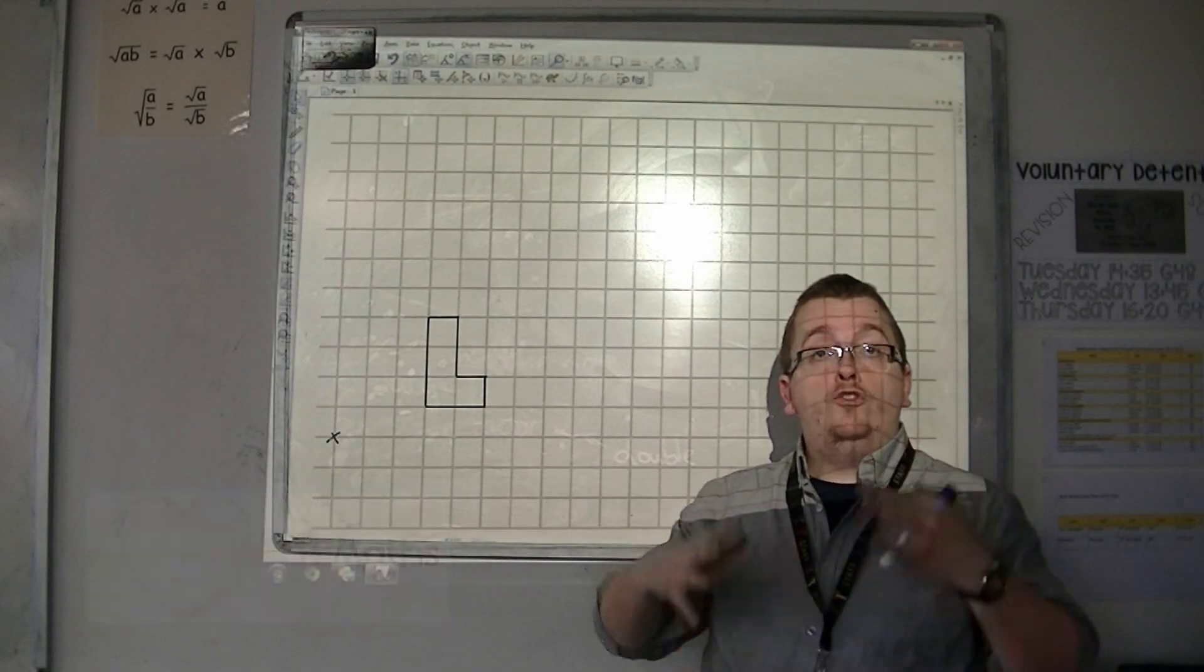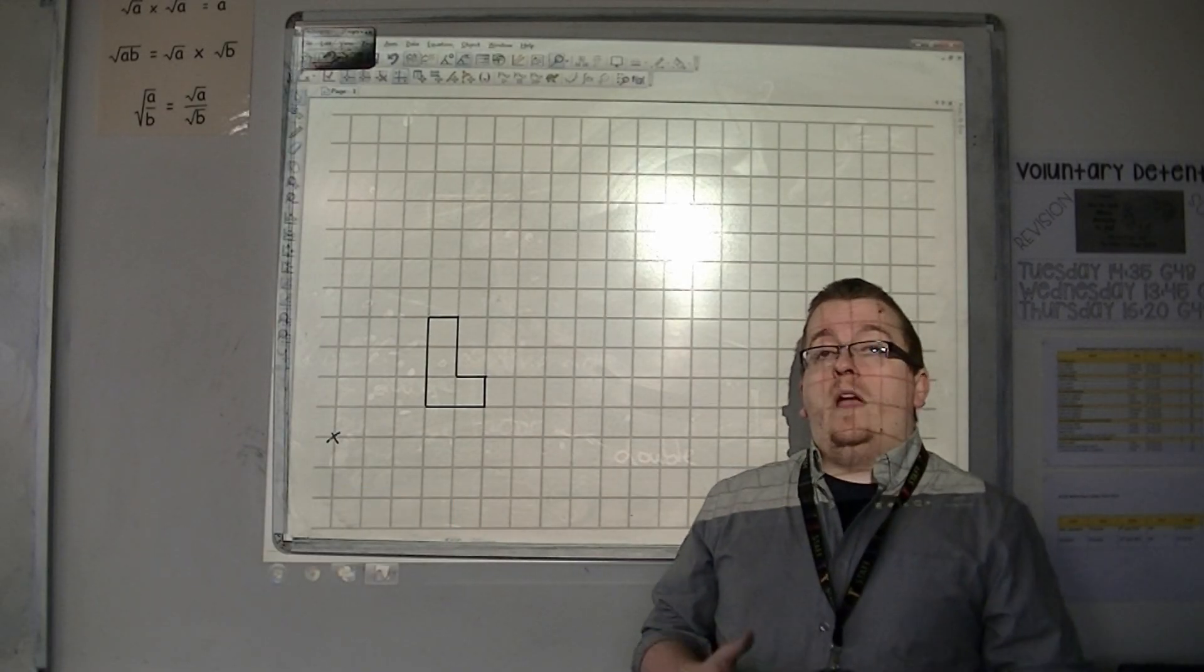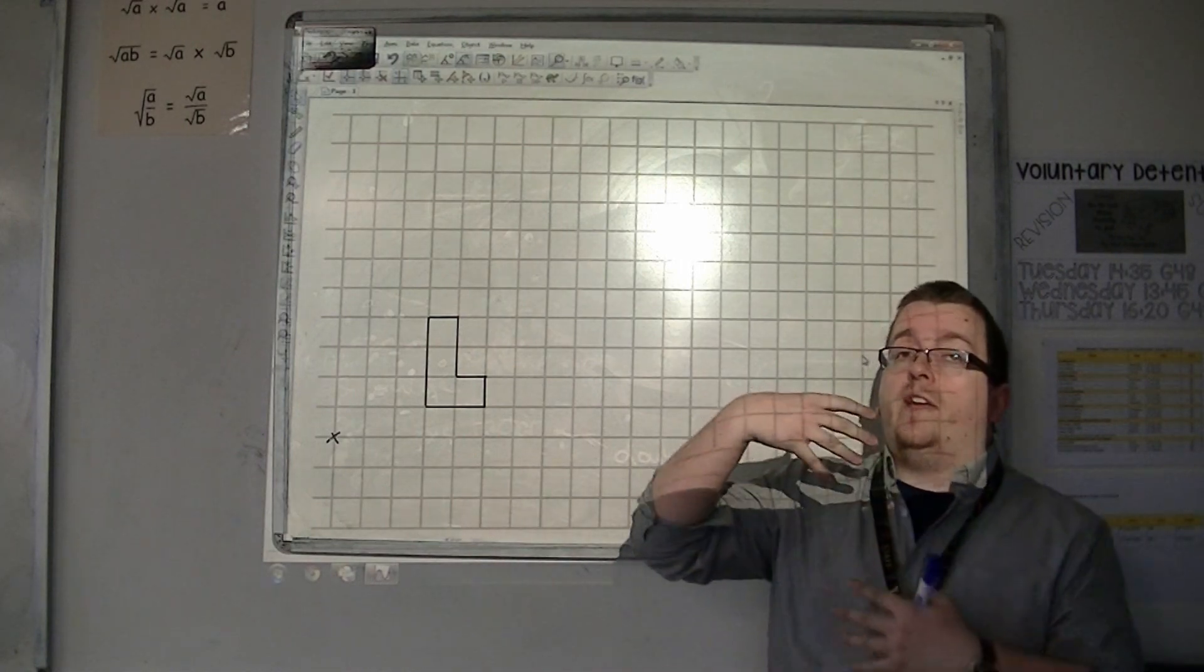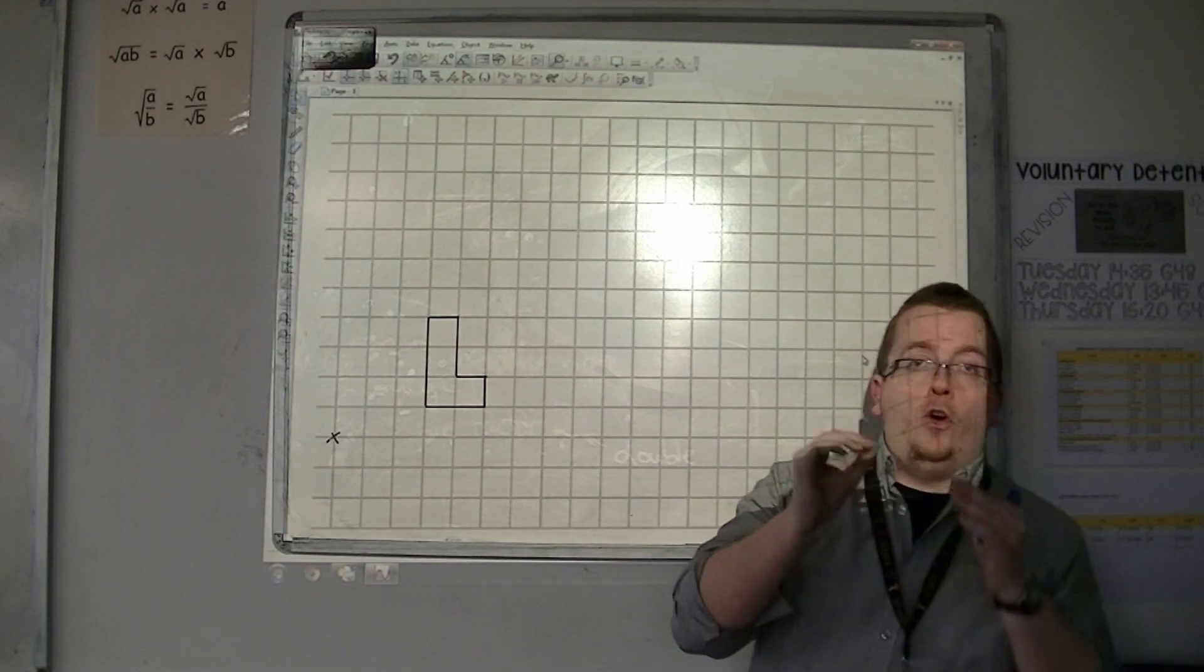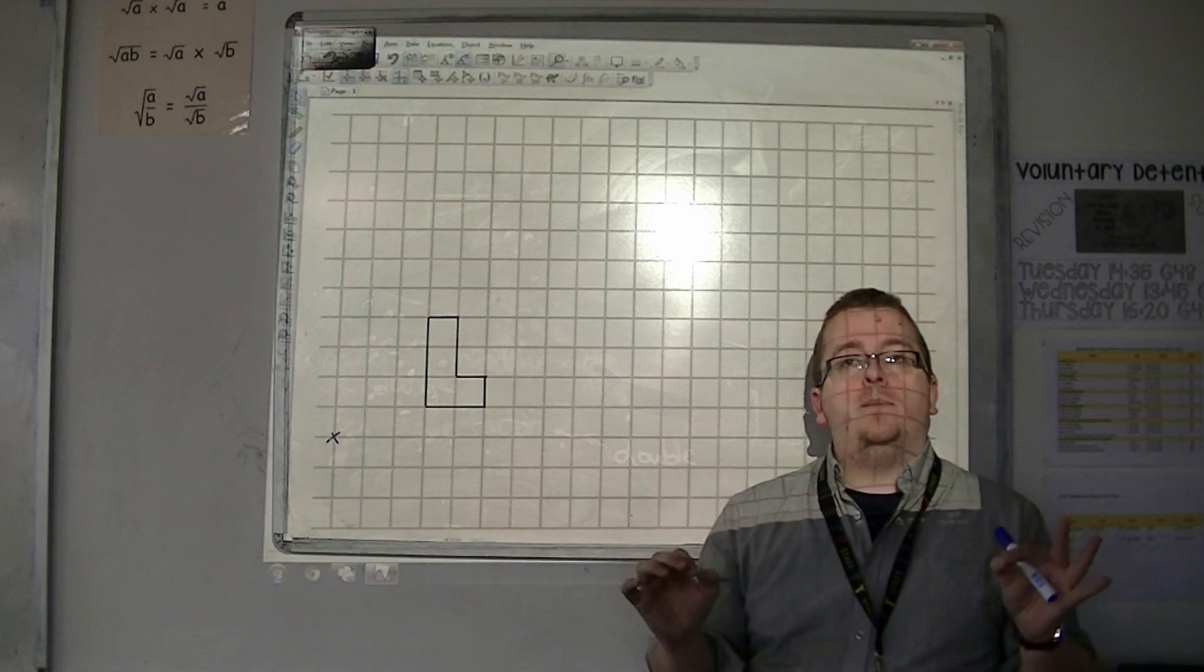Continuing on from the previous video where we introduced enlargements, we found that if we enlarge by a scale factor of 2, then all of the lengths of the shape doubled.